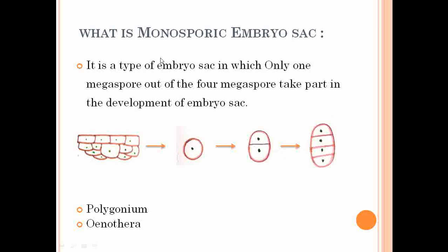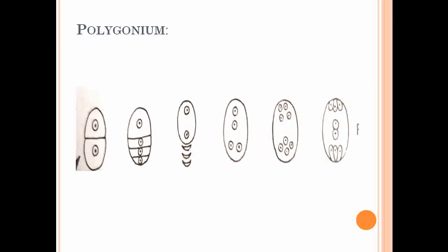There are two types of embryo sacs observed under monosporic embryo sacs: the Polygonum type and the Oenothera type. Let's see one by one the different types of embryo sacs present under the monosporic embryo sac. Let's see first the development of Polygonum type of embryo sac.